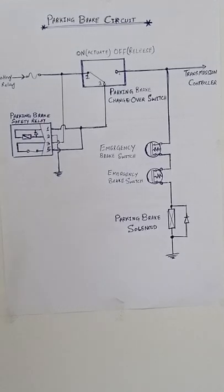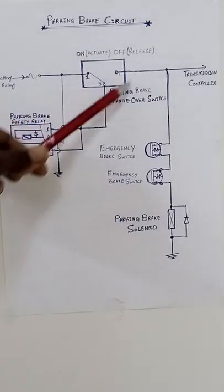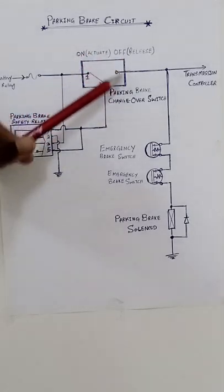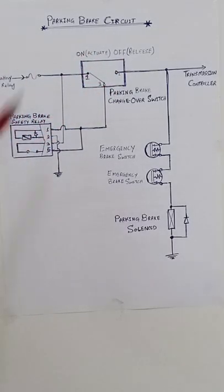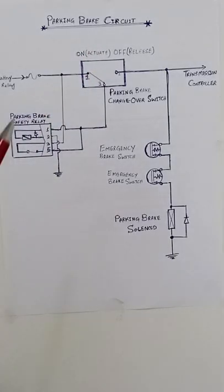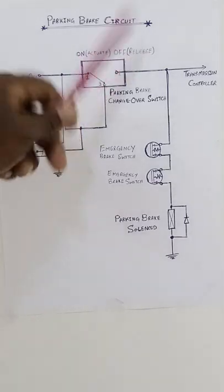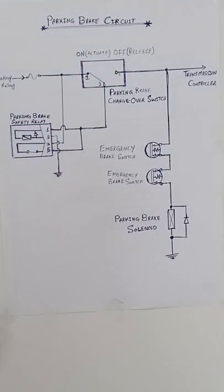First you understand: on means actuate, off means release. When our switch is on, it means our brake is applied, our brake is in operation.